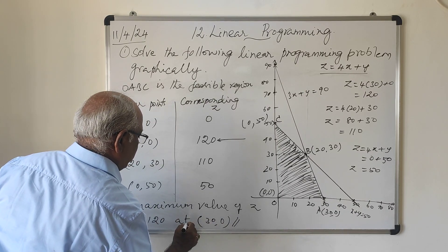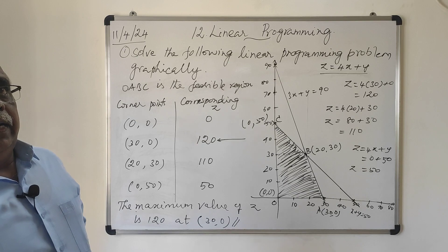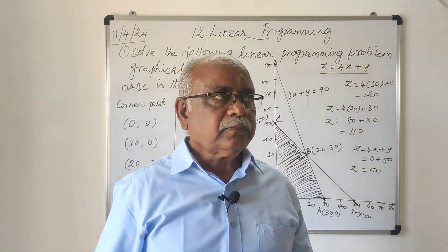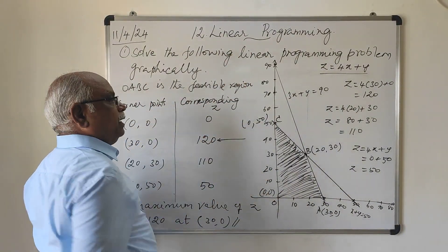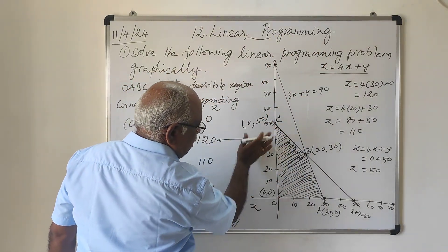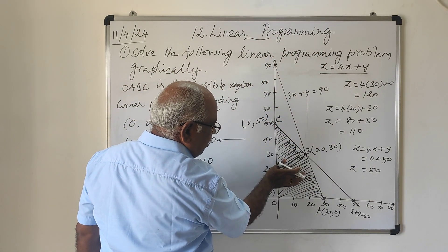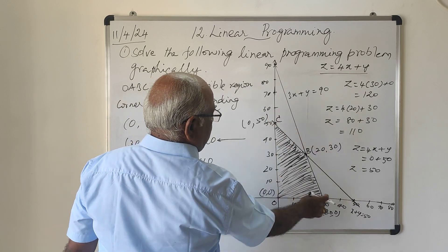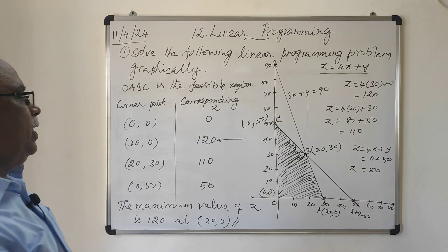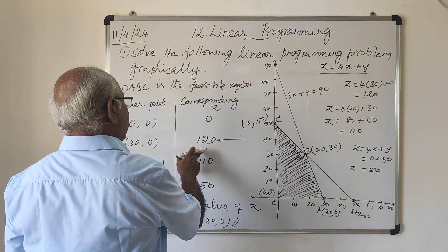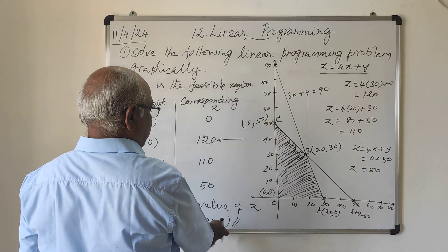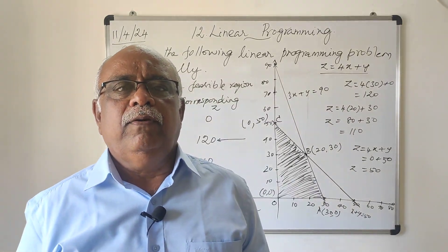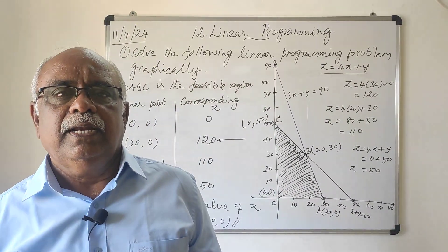That is all about the problem. The maximum value of z is 120 at the point (30, 0). This is the maximization problem — maximization of the linear function. This region is called the feasible region, and the points inside the feasible region are called solution points. O, A, B, C are the vertices bounding the feasible region, and in this region the function attains maximum 120 at the point (30, 0). You will solve the next problem in the next video. Thank you.